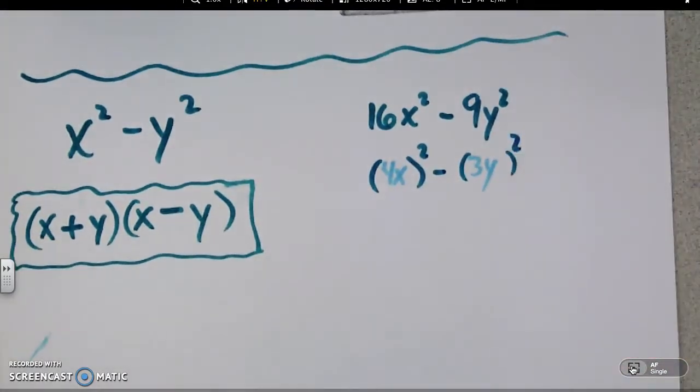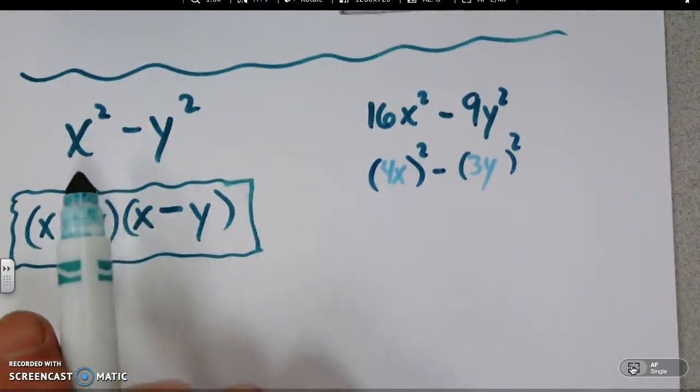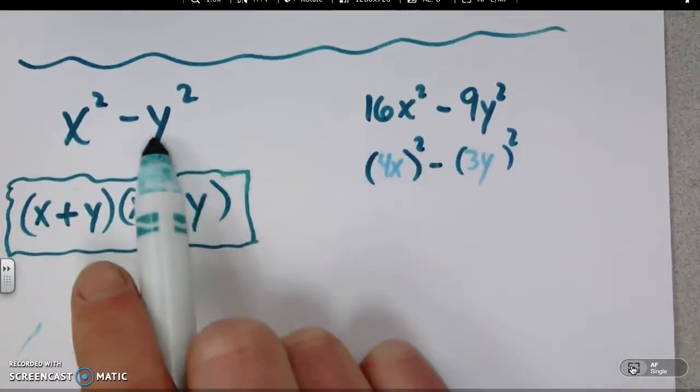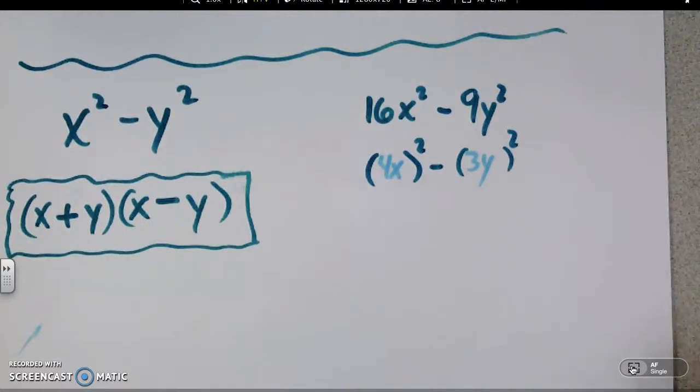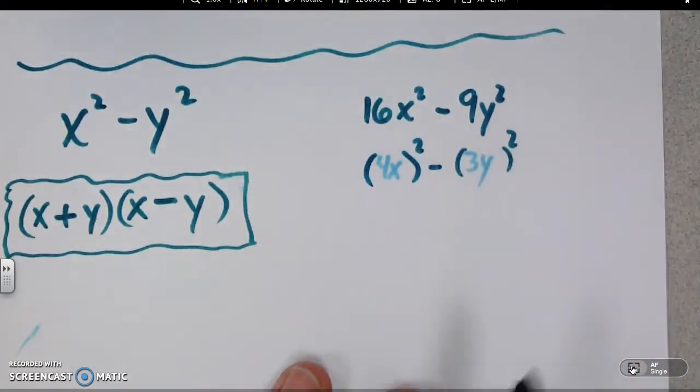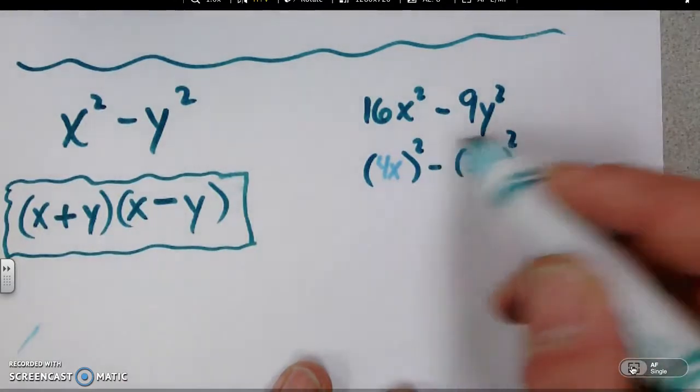And if we think of this one as being 3y, then it's exactly the same as this. Just instead of x, you have a 4x. Instead of y, you have a 3y. But the method is the same because it's still a perfect square minus a perfect square. A difference of squares.